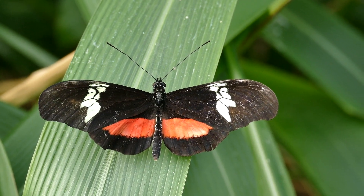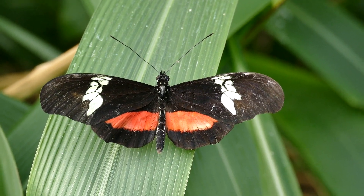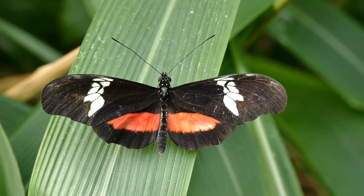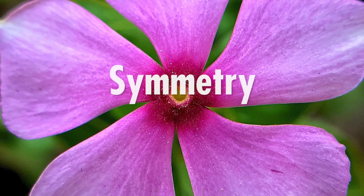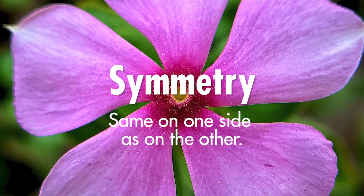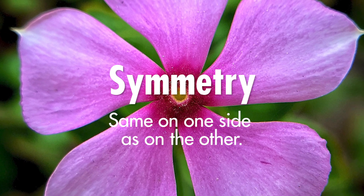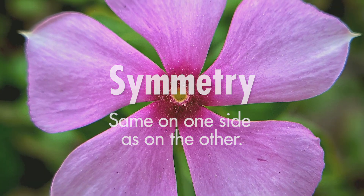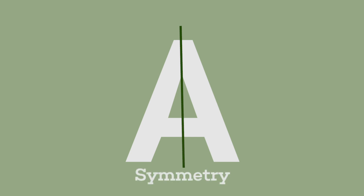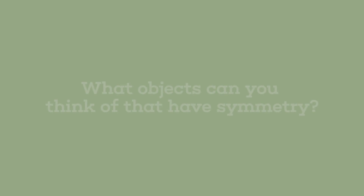Before we start cutting our fruit, let's talk about symmetry. We know something has symmetry when it is the same on one side as on the other. For example, if we draw a line down the middle of an uppercase A, we can see that it is the same on both sides. This is symmetry. What objects can you think of that have symmetry?